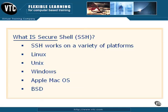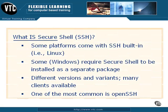Secure Shell works on a wide variety of platforms. It was originally invented for Unix-like operating systems — Unix, Linux, BSD, and so forth — but it has been ported to a wide variety of platforms. Most Linux distributions come with it built in these days. Unix has SSH available, and we even have SSH available for Windows, because Windows does not have a secure means of network communication built in for remote administration by default. Apple Mac OS can also use Secure Shell since it's essentially based on FreeBSD. Some platforms come with SSH built in, like Linux, whereas some — particularly Windows — require Secure Shell to be installed as a separate package.